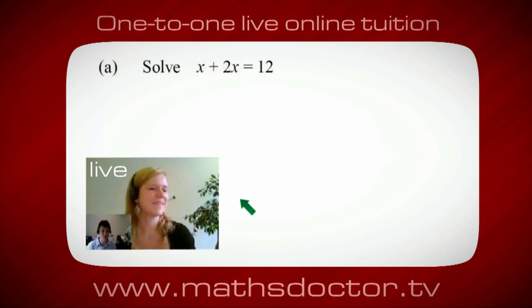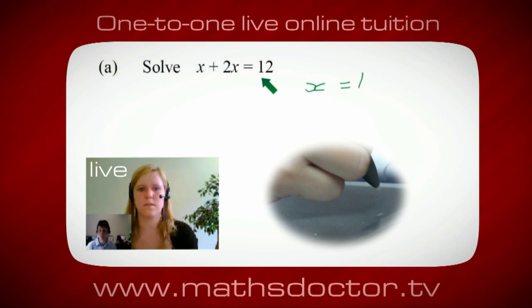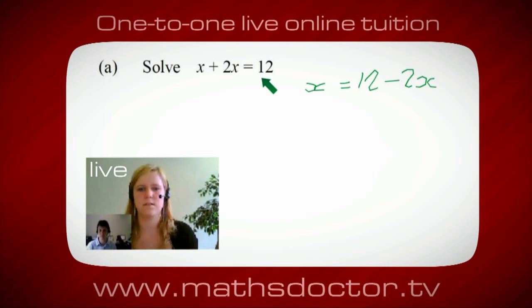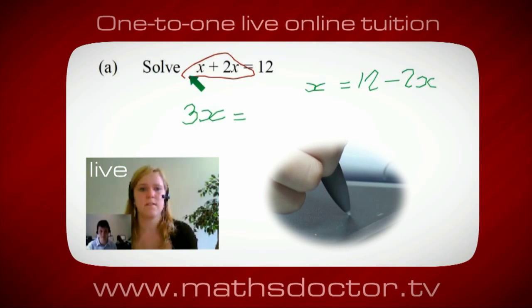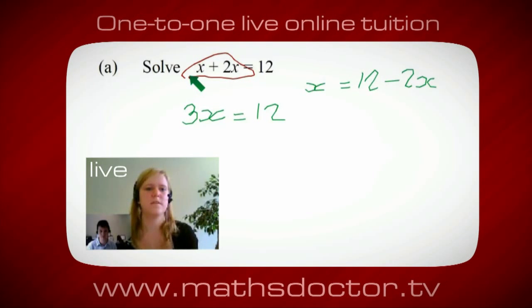OK, Marie, so let's have a look at this one. Solve x plus 2x equals 12. So what do you think you'd do first? OK, well, I want x on its own. So I would put x equals 12 minus 2x. OK, so a lot of the time we want to get x by itself. But what we want to do first is get all of these x's together. So can you see anything we can do with this? Get all these together in one place. OK, it's 3x, isn't it? Yeah, absolutely. So 3x equals 12. Oh, and so x equals 4. Brilliant, spot on, well done.